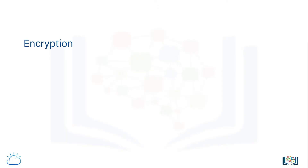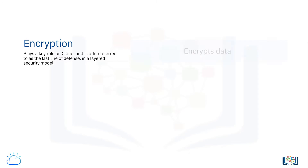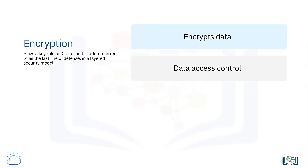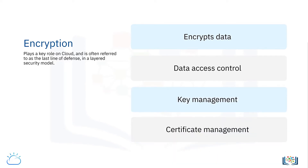Given the concerns around data security and privacy, especially in public cloud environments, encryption plays a key role and is often referred to as the last line of defense in a layered security model. This protection not only encrypts data but also provides robust data access control, key management, and certificate management. In this video we will take a closer look at cloud encryption.